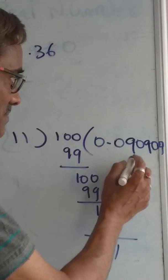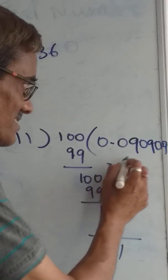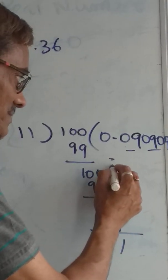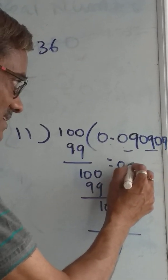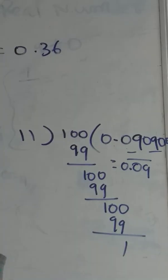So what's happening? 0, 9, 0, 9, 0, 9. The same pattern, 0, 9 repeatedly coming. This is also an example of a rational number because it is recurring.